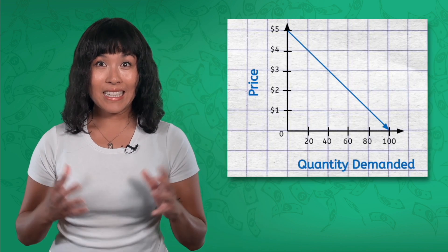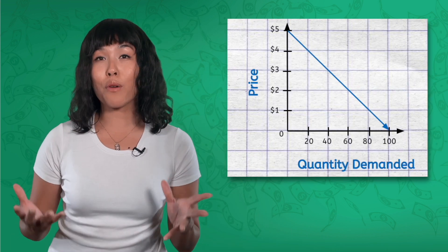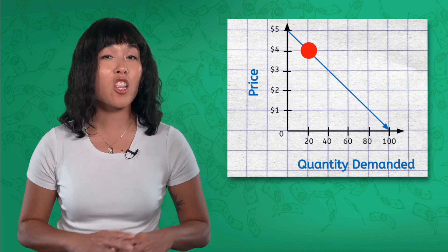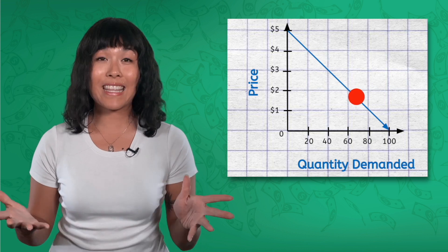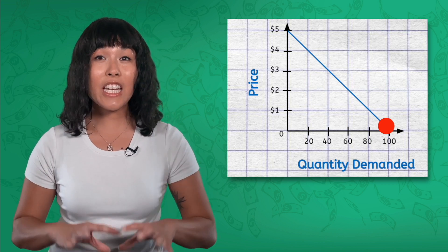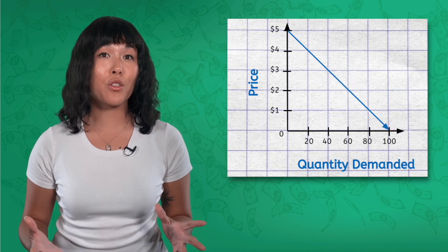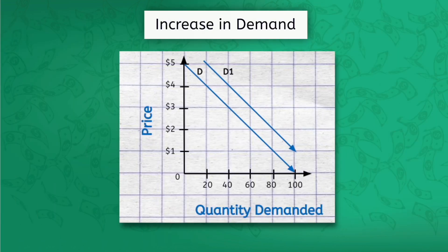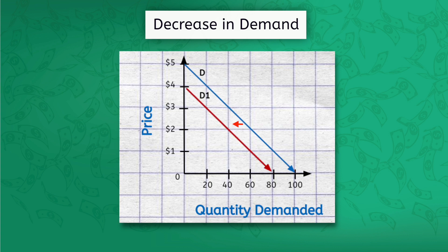Now that we've identified some of the shifters of demand, let's take a few minutes to talk about how we represent them in graph form. If it's a price change, this is going to cause a change in the quantity demanded, and that is represented by movement along the current demand curve. But in the case of those non-price shifters of demand, where demand is changed at every price, we need a whole new demand curve. When analyzing those shifters, we have to decide whether it's going to cause an increase or decrease in demand. An increasing demand means the demand curve shifts to the right; a decreasing demand means the curve shifts to the left.